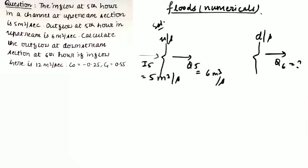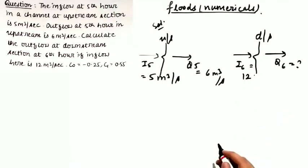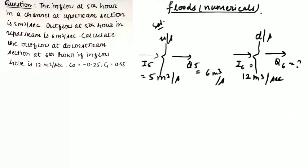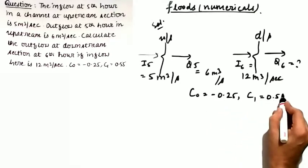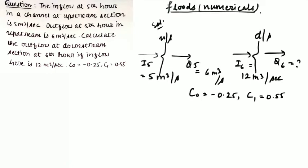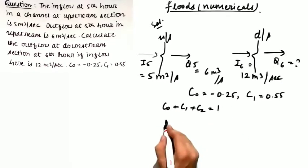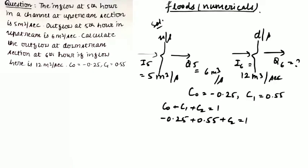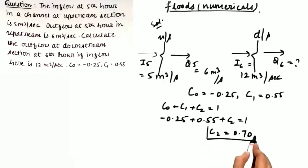I6 is given as 12 m³/s. You are also given the Muskingum coefficients: c0 = -0.25 and c1 = 0.55. We know that c0 + c1 + c2 = 1, so -0.25 + 0.55 + c2 = 1, which gives c2 = 0.70.